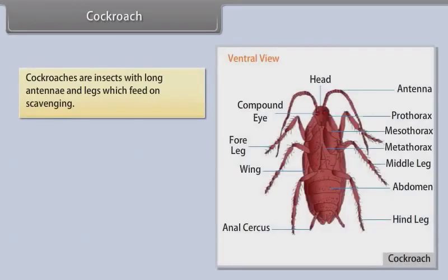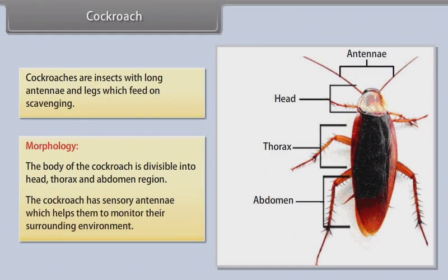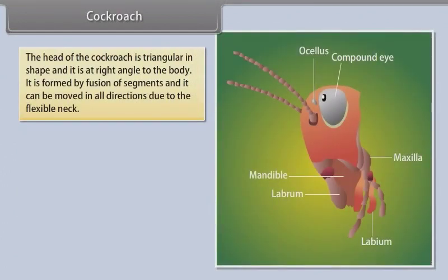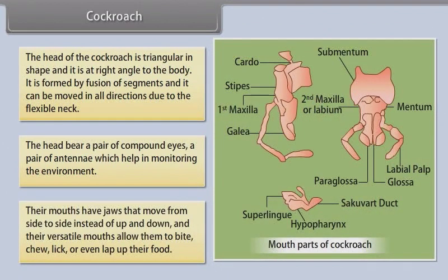Cockroaches are insects with long antennae and legs, which feed by scavenging. The body of the cockroach is divisible into head, thorax, and abdomen. The cockroach has sensory antennae which help monitor the surrounding environment. The head is triangular in shape, at right angle to the body, formed by fusion of segments, and can be moved in all directions due to a flexible neck. The head bears a pair of compound eyes and a pair of antennae. Their mouths have jaws that move from side to side, and their versatile mouths allow them to bite, chew, lick, or even lap up food.